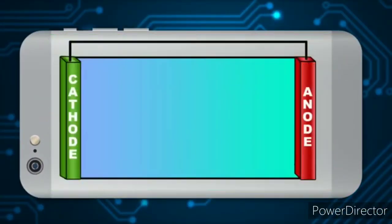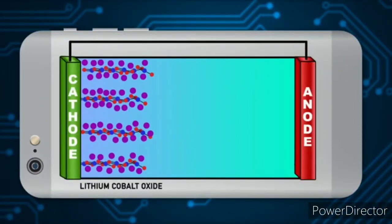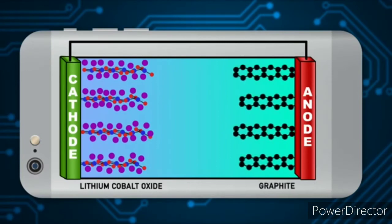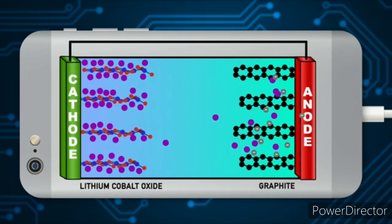In lithium-ion batteries, the electrode combo is usually a lithium cobalt oxide cathode and a graphite anode. When you plug in your phone, electrons enter your phone's battery and cause lithium ions to meet up with them at the anode. Once at the anode, the lithium atoms nestle in sites between the graphite's carbon layers.